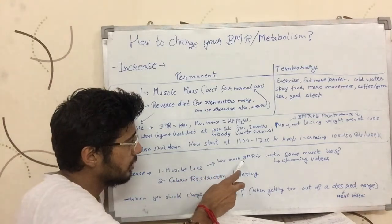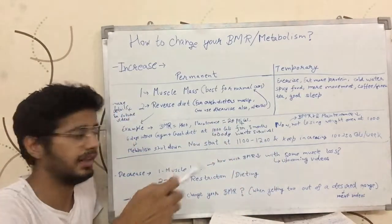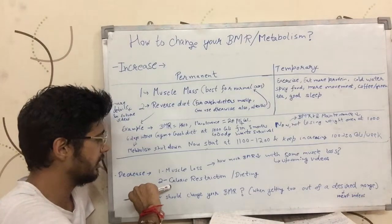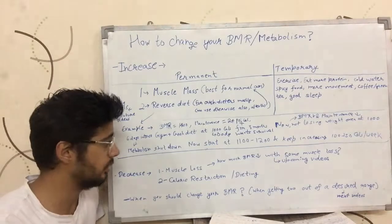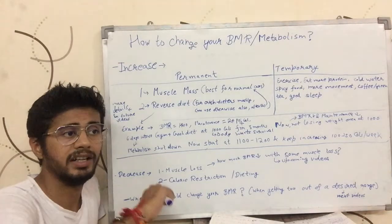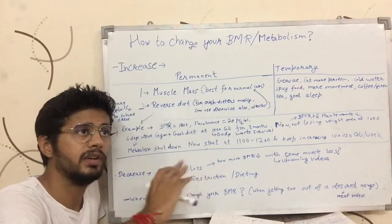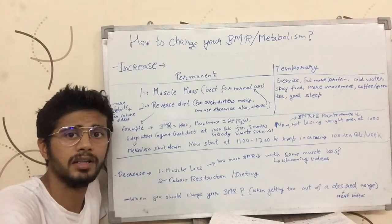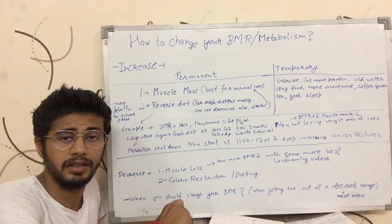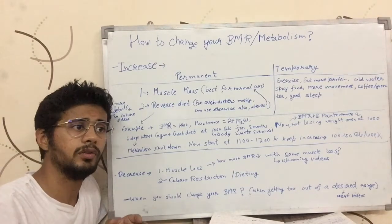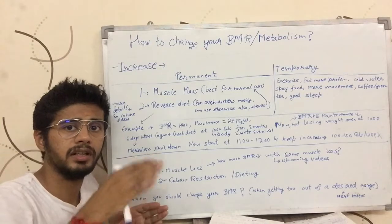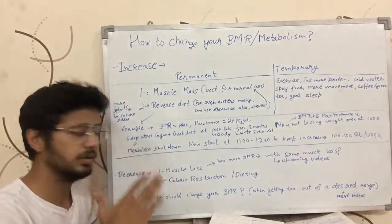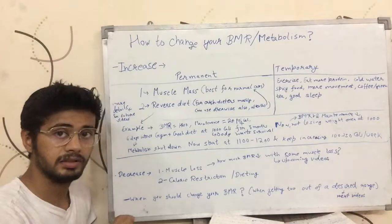How much your BMR decreases or increases when you lose or gain muscle — I will talk about that in my next one or two videos. The second method to decrease your BMR is caloric restriction or dieting. If your maintenance calories were 3000 calories and you are eating 2700 calories for a long period of time, like three to four months, then your body would start burning lesser amounts and try to take down the maintenance to 2900, 2800, 2700. So eating lesser food can help take down the BMR or metabolism.